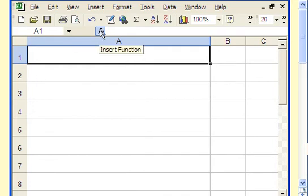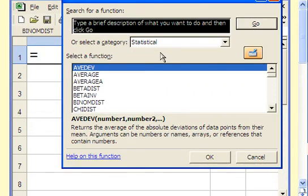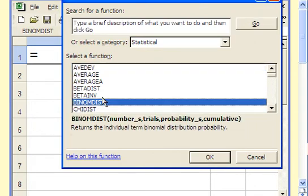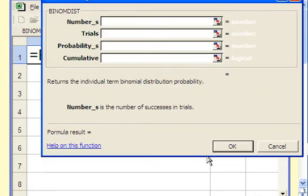If we look under the function browser, and then under the statistical menu, there's a function called binomdist. So go ahead and pull that up. And we have to give it a number of pieces of information. First of all, the number of successes. Remember, we want to know 37, exactly that many.